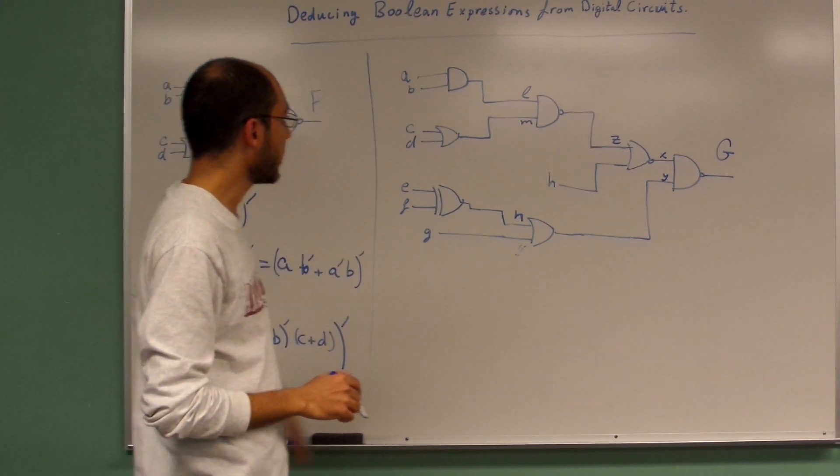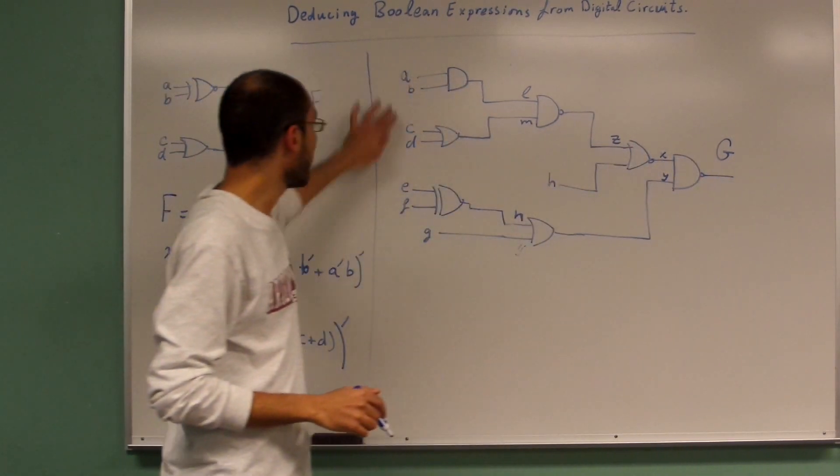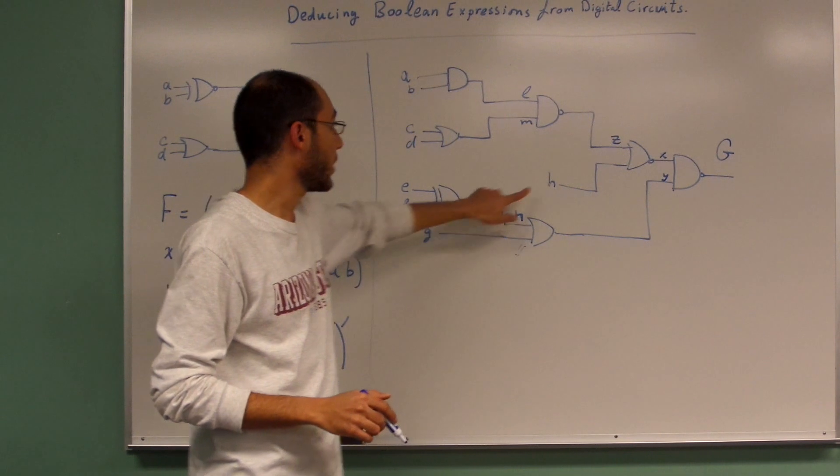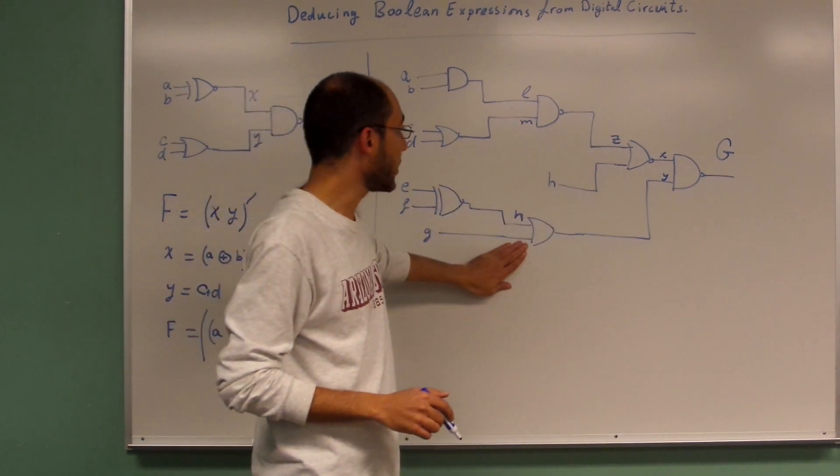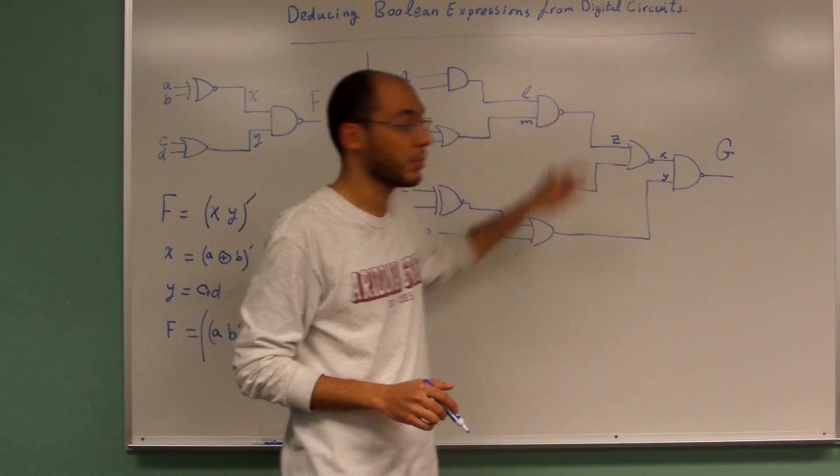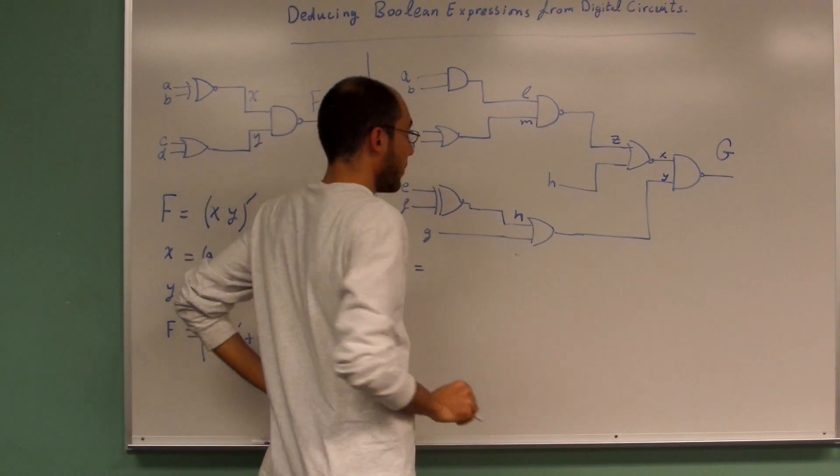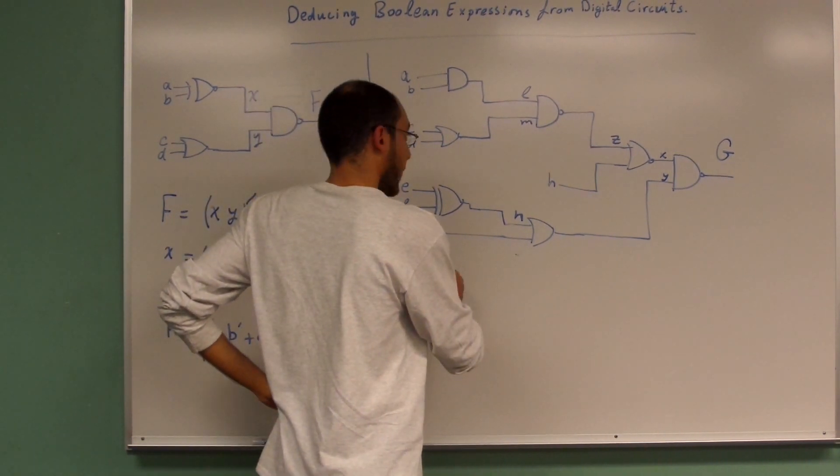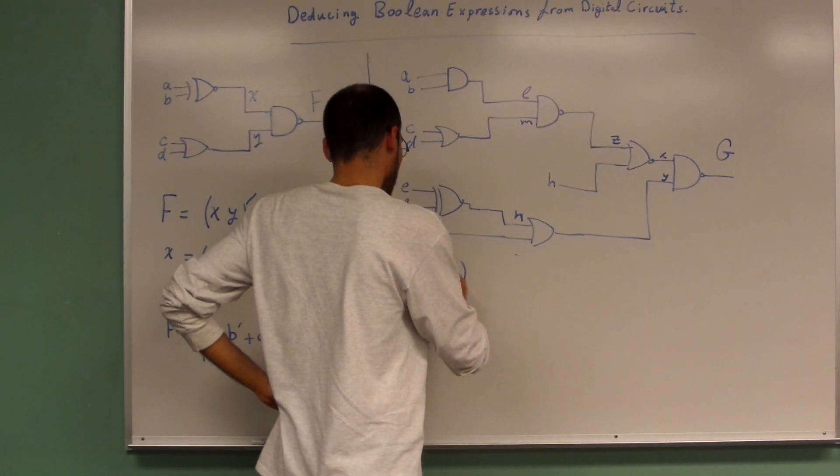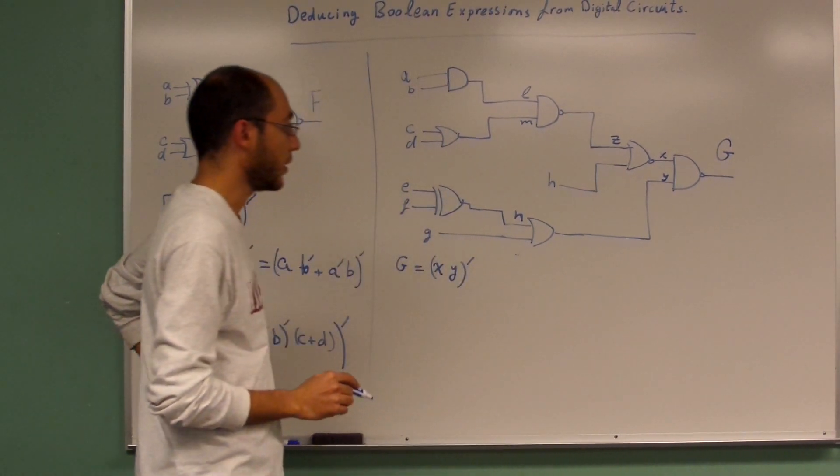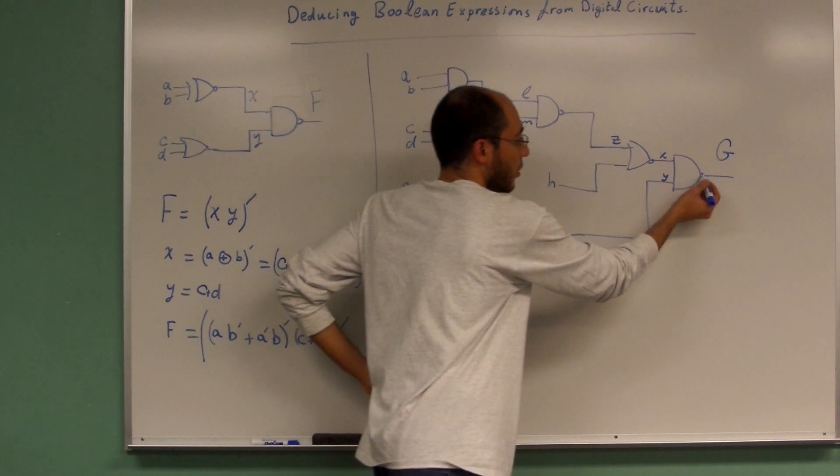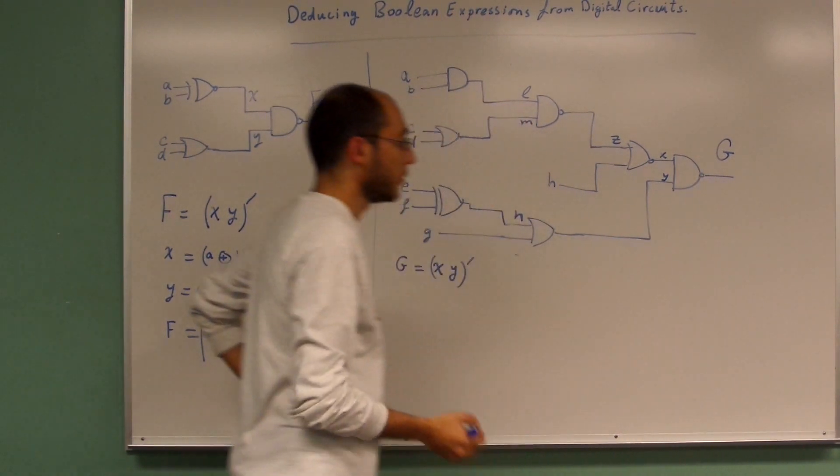Let's find the value of G in terms of A, B, C, D through X and Y. But first we need to find it in terms of X and Y and proceed from there. So G equals X and Y and then a not gate because of this not gate, right?